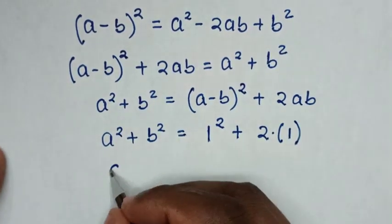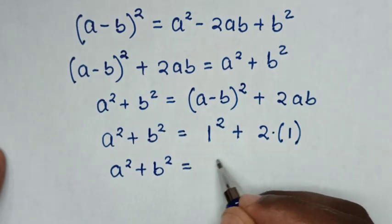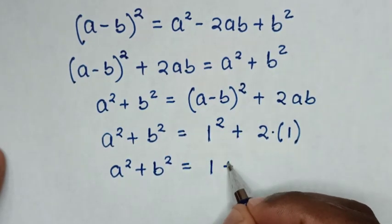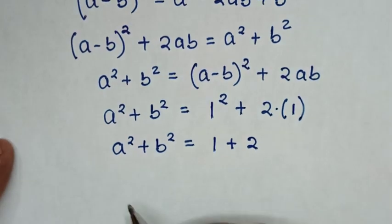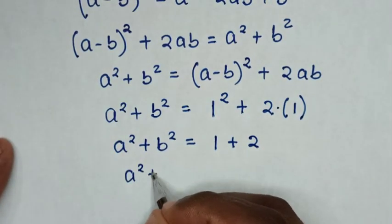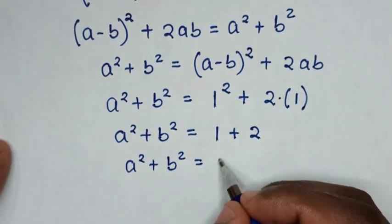Then it will be A square plus B square is equal to 1 square is 1 plus 2 times 1 is 2. Then it will be A square plus B square is equal to 1 plus 2 is 3.